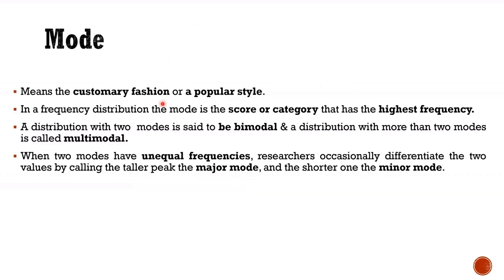Next we will talk about the mode. Mode means customary fashion or a popular style. It is the score or category that has the highest frequency. It can be bimodal when we have two modes, or multimodal when we have more than two modes. When two modes of unequal frequencies are there, we call the tall peak the major mode and the shorter one the minor mode.